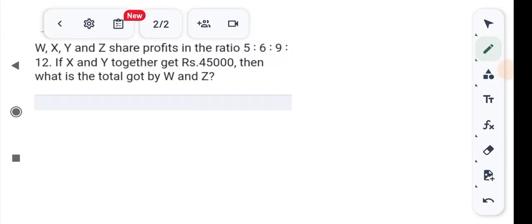W, X, Y and Z share profit in the ratio of 5:6:9:12. If X and Y together get rupees 45,000, then what is the total got by W and Z?